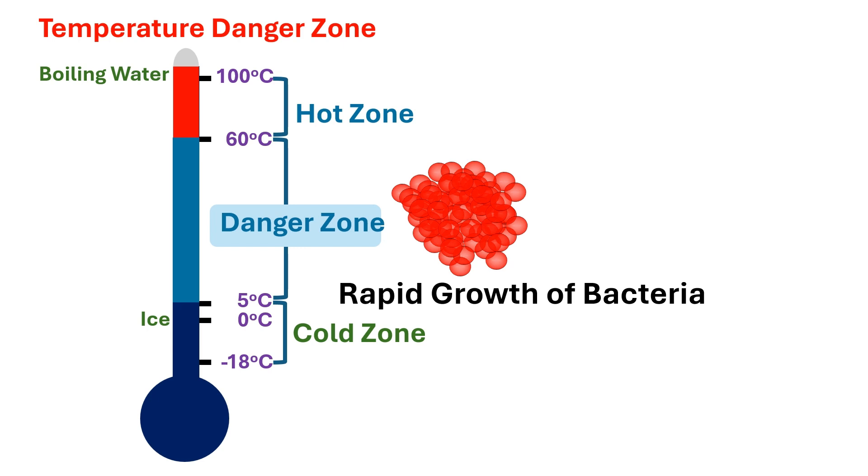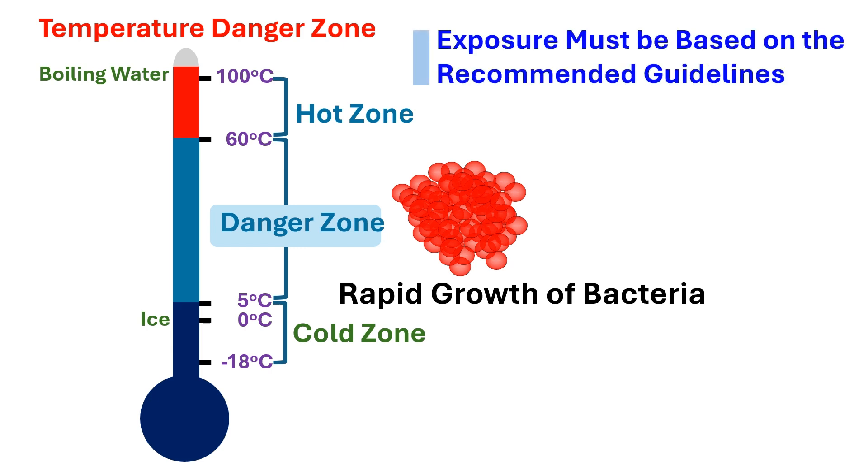Foods are exposed to a danger zone during processing, storage, and transport. We could not avoid the danger zone, but the exposure must be based on the recommended guidelines. For example, if we heat or cook a food, then we must cool it fast as guidelines.